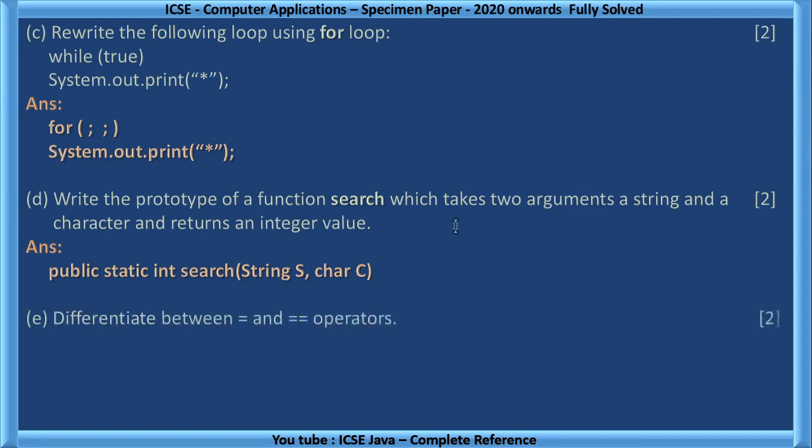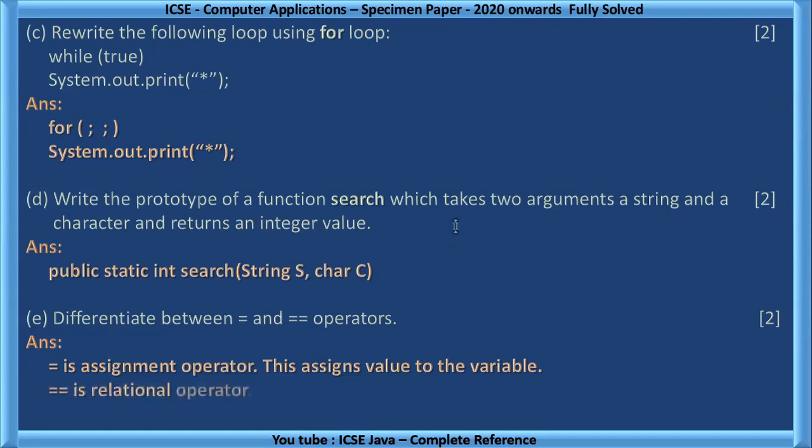Differentiate between equal to and equal to equal to operators. We know equal to operator is assignment operator. This assigns value to the variable. The value is right side and the variable should be left side. Equal to equal to operator is relational operator. This compares the values of either side and returns a boolean. It says whether true or false.